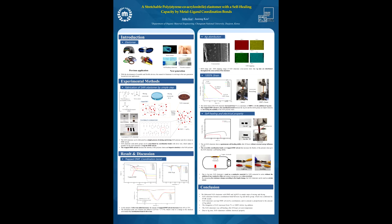The mechanical property was measured by tensile test. The initial strain of SAN elastomer increased from 5% to a maximum of 1000% with the addition of silver ions. The trapped DMF solvent by coordination bonds between silver ions and the nitrile group can impart elasticity by increasing the mobility of the SAN polymer chain.